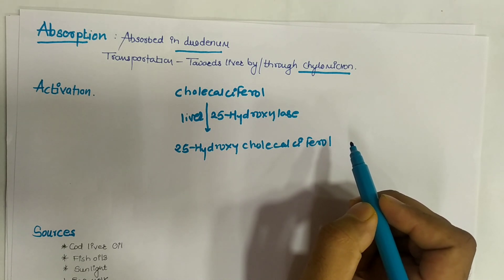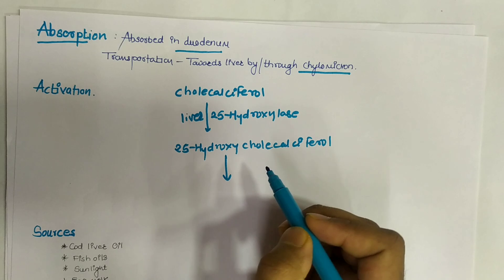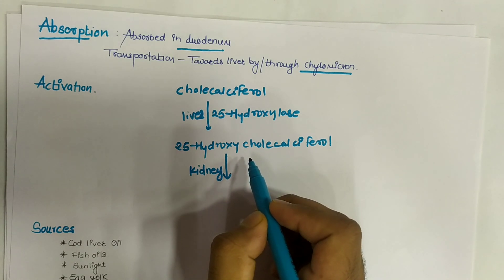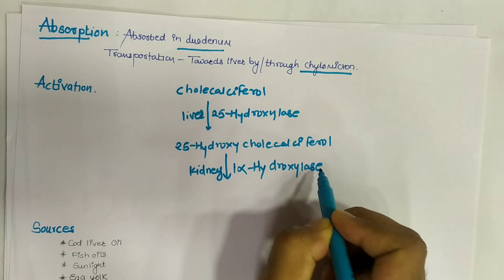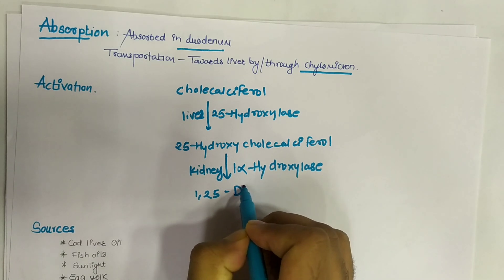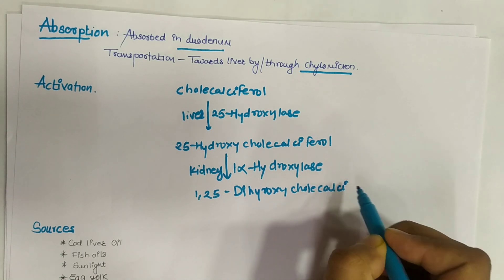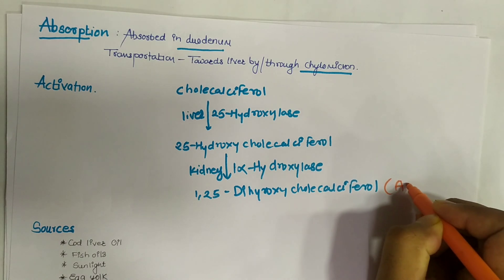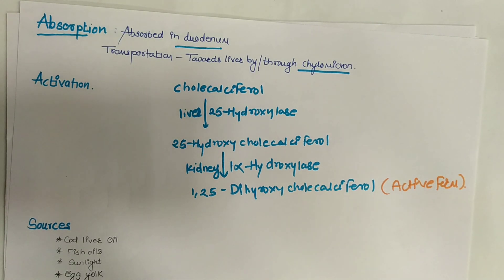In the kidney, the enzyme 1-alpha-hydroxylase converts 25-hydroxycholecalciferol into 1,25-dihydroxycholecalciferol — the active form of vitamin D, calcitriol. This is how the activation of vitamin D occurs, involving the duodenum, liver, and kidney.